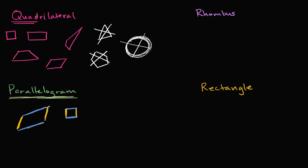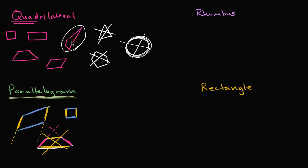So what's not a parallelogram? Something like this would not be a parallelogram. You might say two opposite sides are parallel, but then you would see that the other two sides are not parallel — if those lines kept going, they would cross each other at some point. So this one is not a parallelogram; it has one set of opposite sides being parallel, but not the other. Another example of something that is not a parallelogram would be this one, because none of the opposite sides are parallel. So for a parallelogram, opposite sides must be parallel.